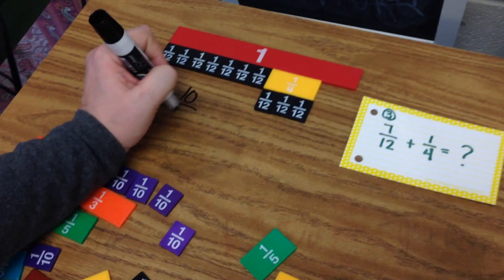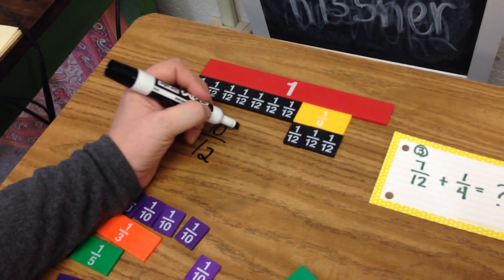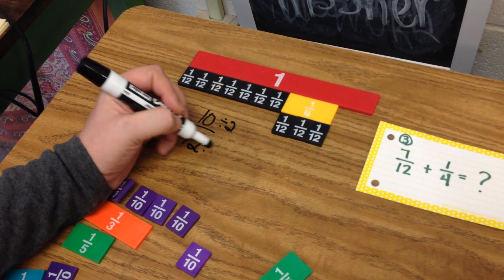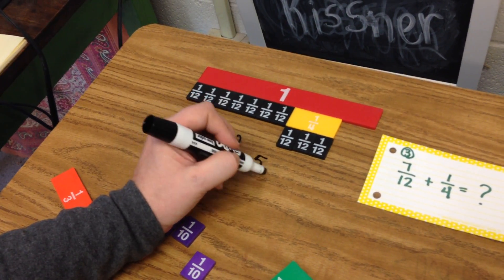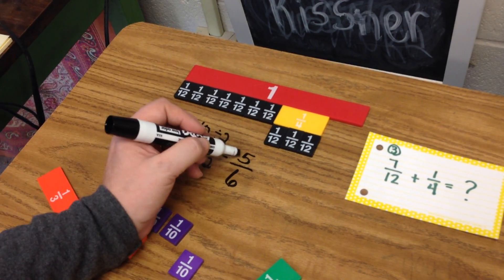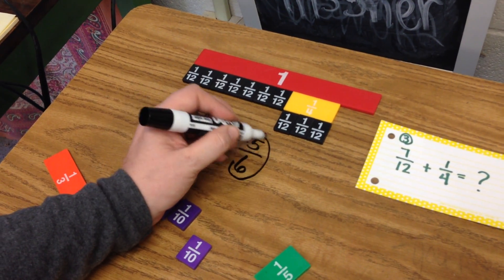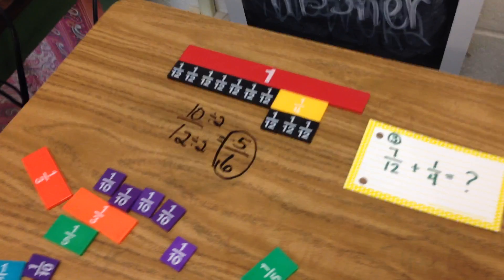That's going to give me ten-twelfths. Since both of these can be divided by two, ten divided by two is five, twelve divided by two is six. These are next-door neighbors on a number line. So five-sixths would be simplest form.